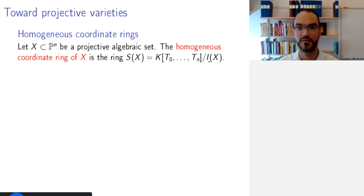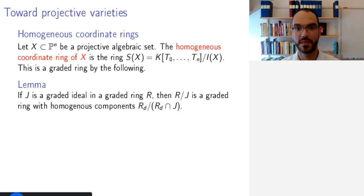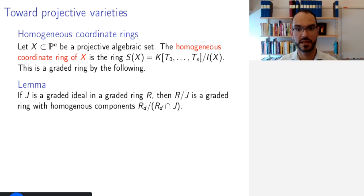This ring is graded and the ideal is also graded, or homogeneous. And therefore, by the following lemma, the quotient is a graded ring. The lemma says generally that if you mod out a graded ring R by a graded ideal J, then the result is a graded ring and the homogeneous components are exactly the quotient images of the homogeneous components of the ring you started with.